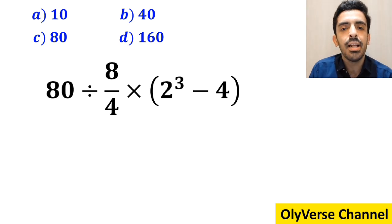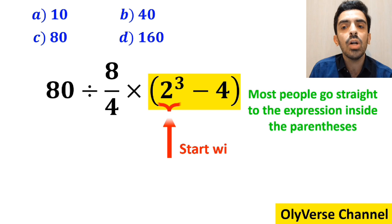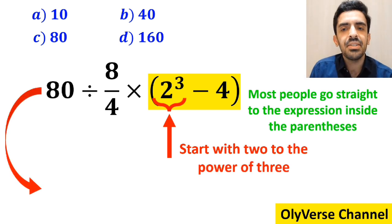The first mistake when solving this question: most people go straight to the expression inside the parentheses and start with 2 to the power of 3. So instead of the original expression, they write 80 divided by 8 over 4 times 8 minus 4 inside the parentheses.